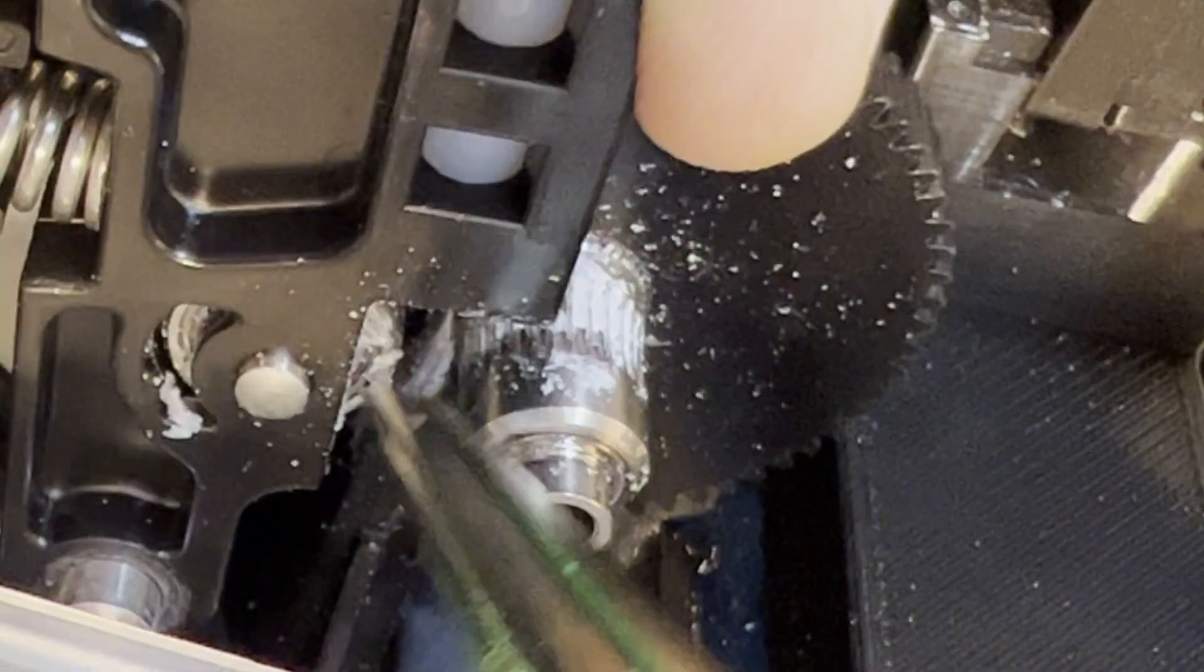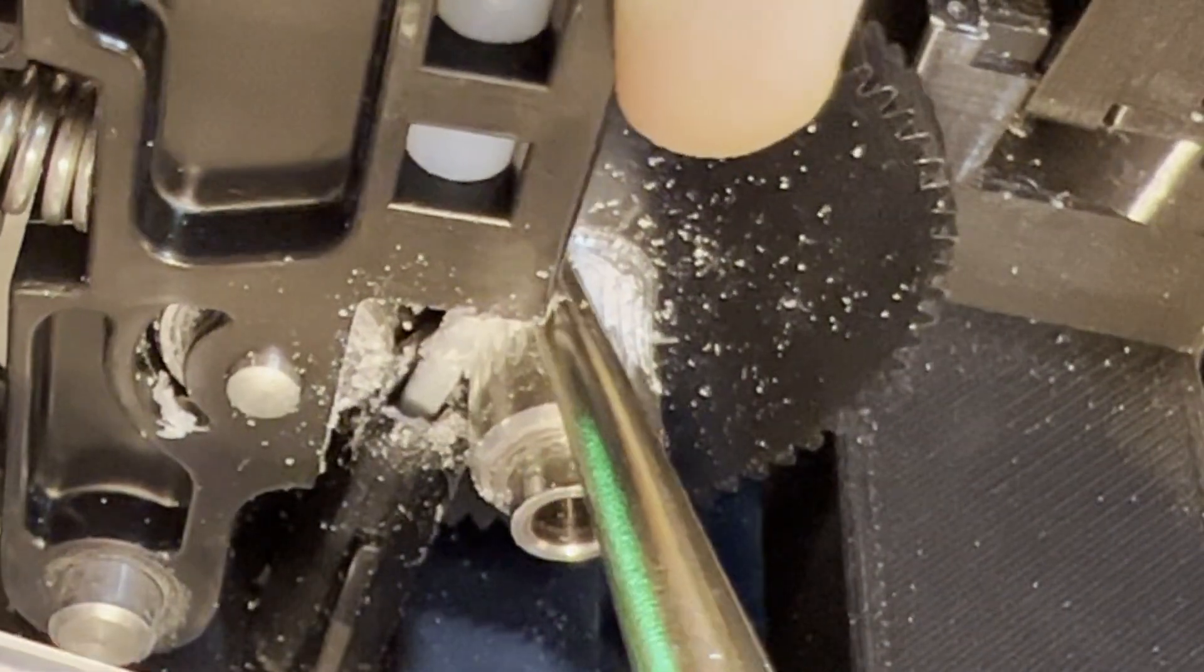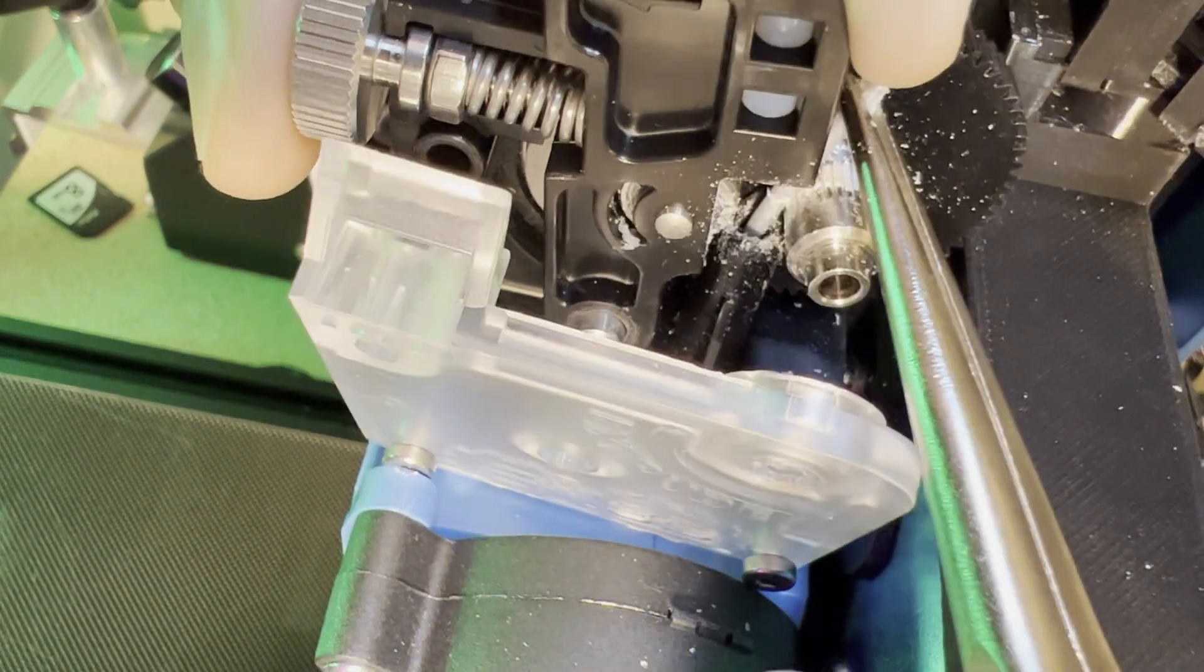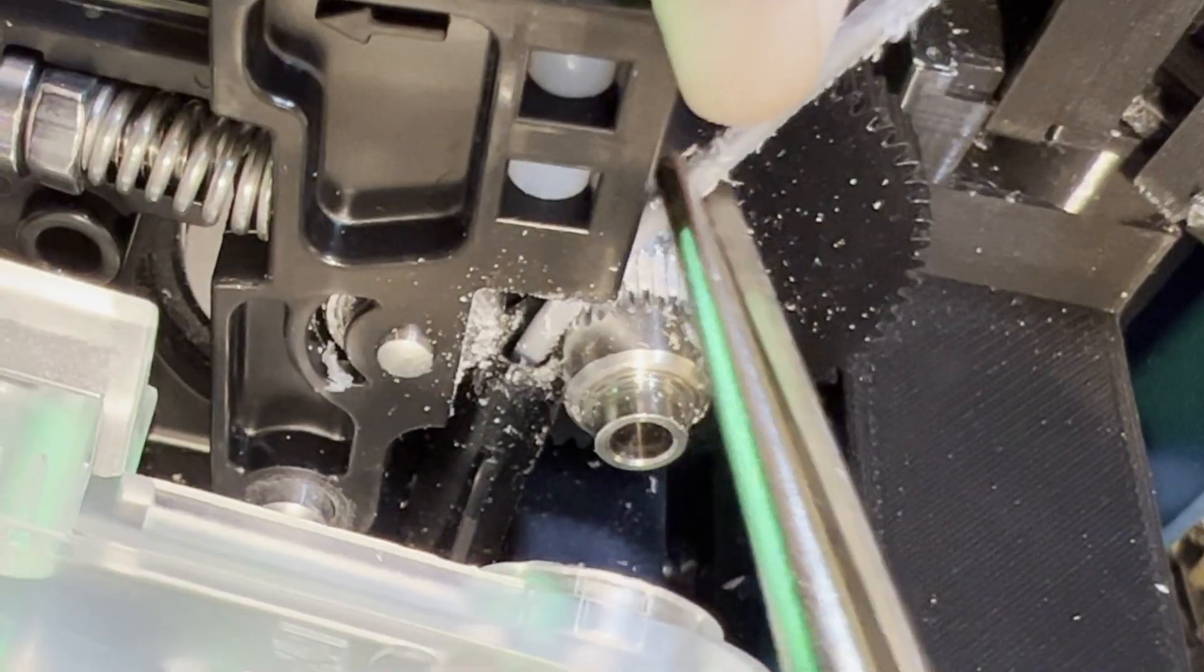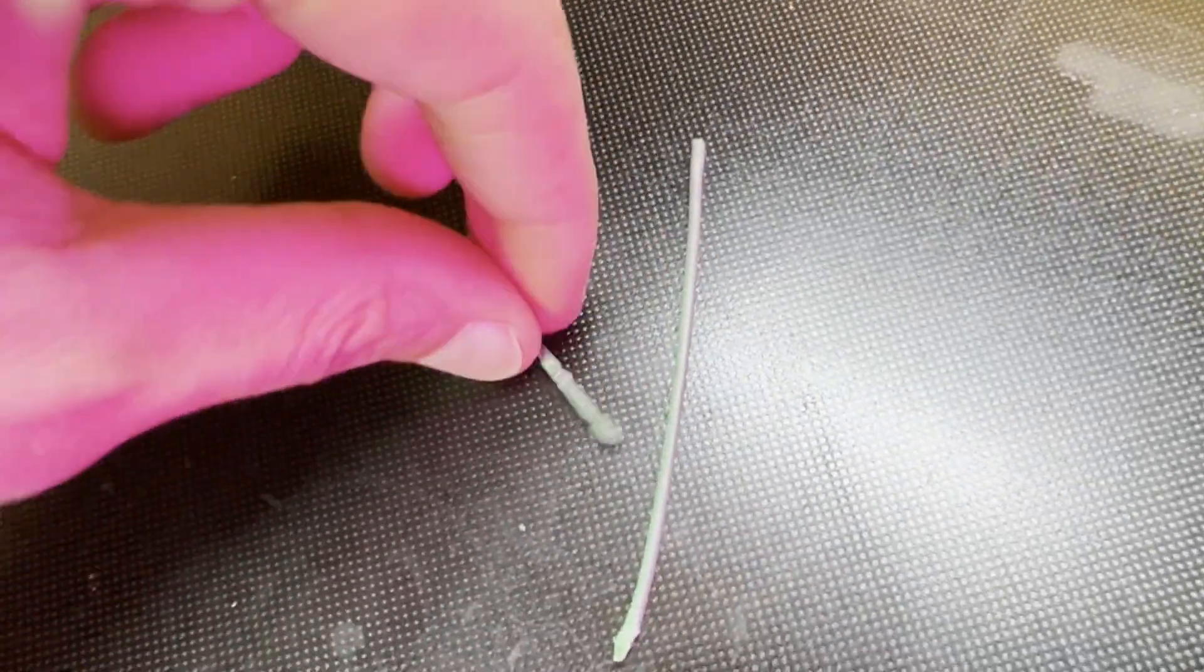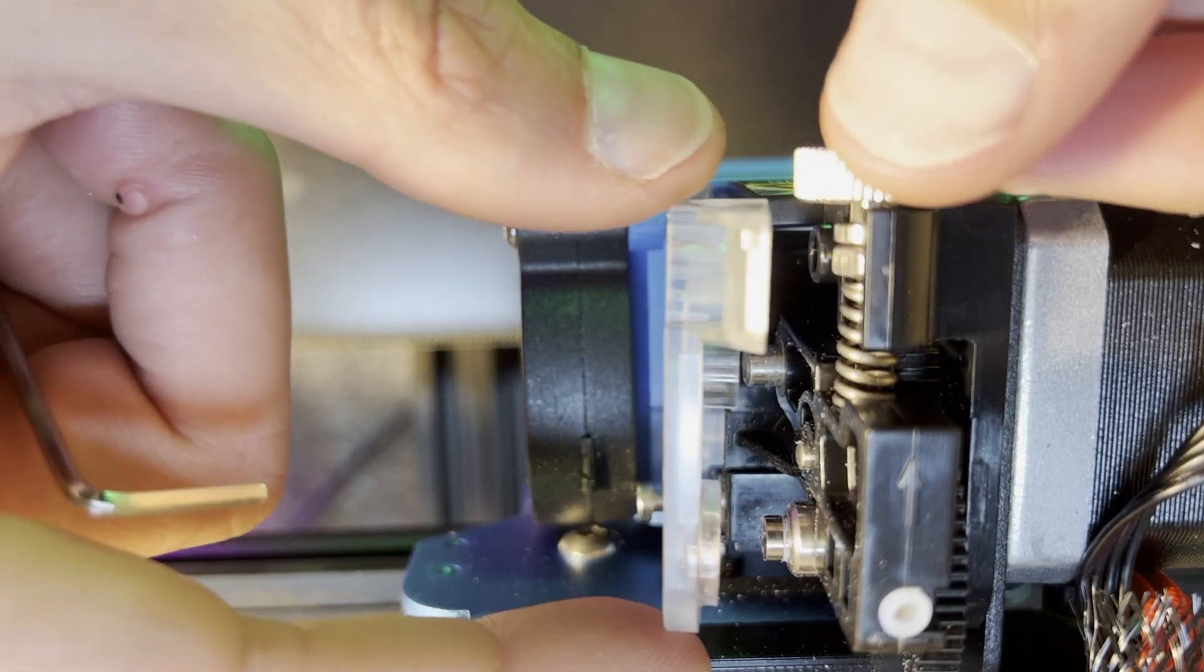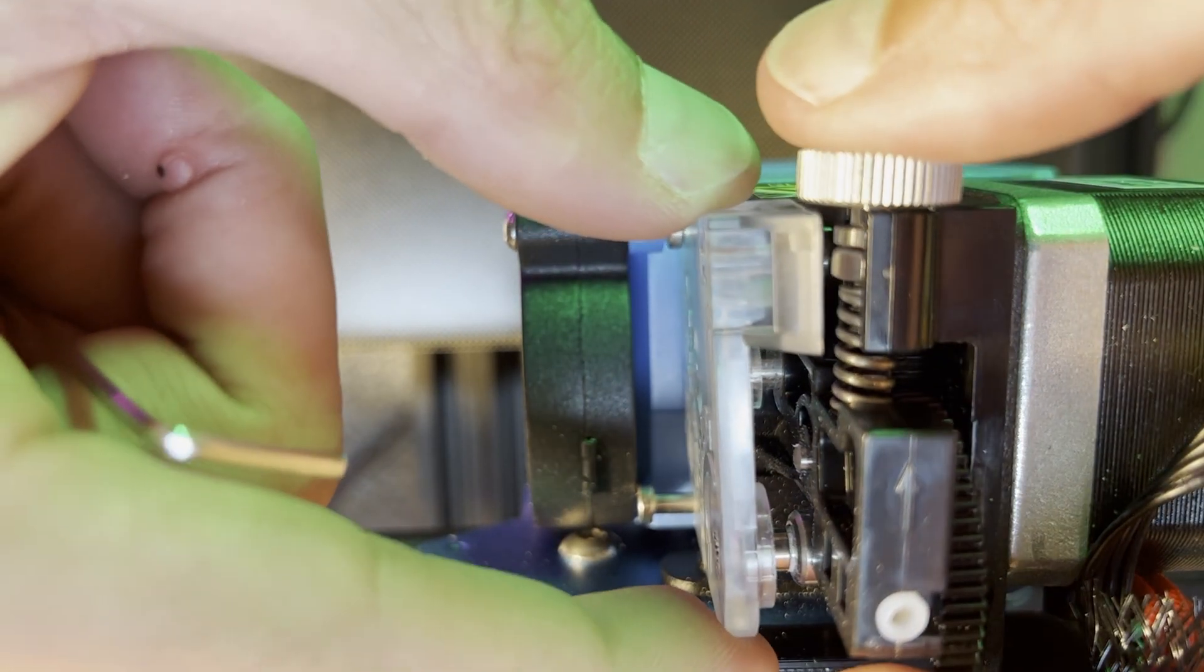Now we'll have to pull out the rest of the filament that's stuck inside the extruder. Here's what I pulled out of the nozzle. Definitely not what we want. Now that we got the jam out of the way, it's time to clean up the shavings and put everything back together.